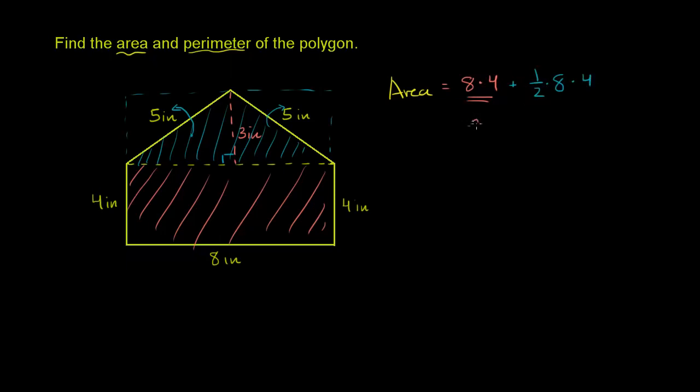This gives us 32 plus, oh sorry, it's not 8 times 4. I don't want to confuse you. The triangle's height is 3. 8 times 3. Right there. That's the triangle's height.